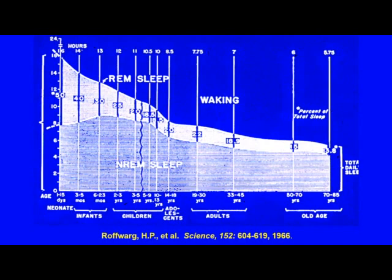These changes are developmental. Adults spend about 20% of total sleep time in REM. Infants, however, spend about 50% of total sleep time in REM, and their total hours of sleep is much more — about twice what it would be for an adult. Preterm infants spend even more time in REM sleep than is shown here.